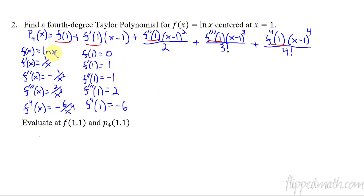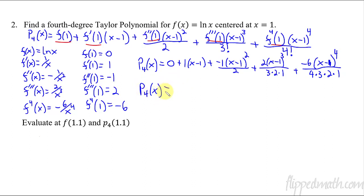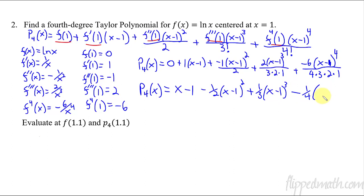Natural log of 1 is 0. Plugging 1 into each derivative, the values come out as: 0, 1, negative 1, 2, and negative 6. So plugging in: f of 1 is 0, first derivative is 1 times (x minus 1), second derivative is negative 1 over 2 times (x minus 1) squared, third derivative is 2 over 3 factorial times (x minus 1) cubed, fourth derivative is negative 6 over 4 factorial times (x minus 1) to the fourth. Simplifying: p of x equals (x minus 1) minus one-half (x minus 1) squared plus one-third (x minus 1) cubed minus one-fourth (x minus 1) to the fourth.